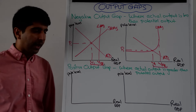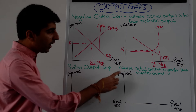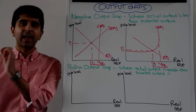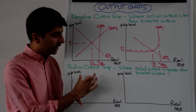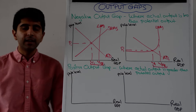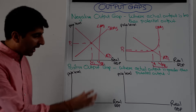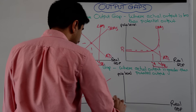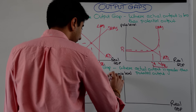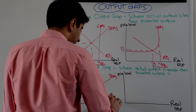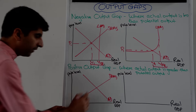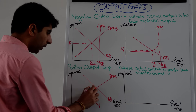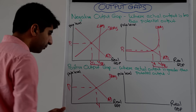What about a positive output gap? A positive output gap occurs where the actual level of output is greater than the potential level of output. Another name for this is an inflationary gap. For a classical economist, let's show AD and SRAS again. Where the two meet we have the actual level of output which is Y1 and we have a price level of P1.